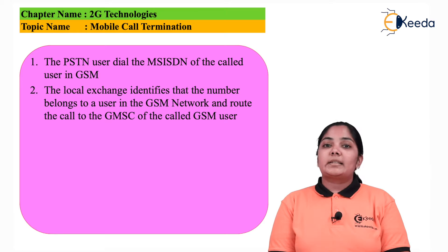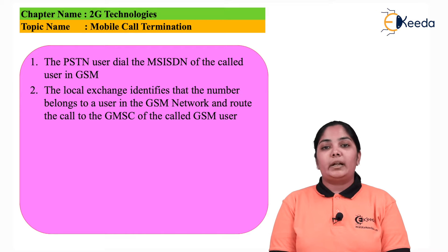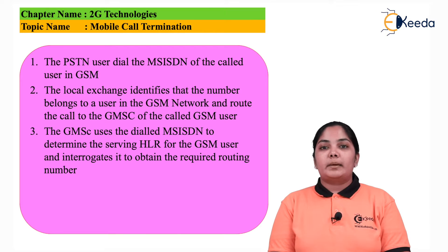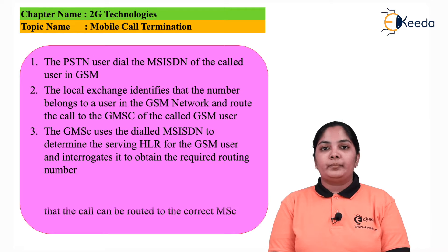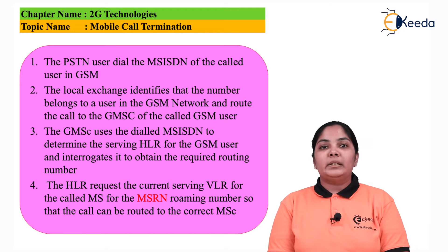Depending on the number, it is understood that this number belongs to a mobile station, and hence the mobile phone number is transferred to the Gateway MSC. On the third step, using the MSISDN number, the Gateway MSC interrogates the HLR for the location of the user. The HLR will trigger the VLR and find out the roaming number, known as the MSRN, i.e. the Mobile Station Roaming Number.